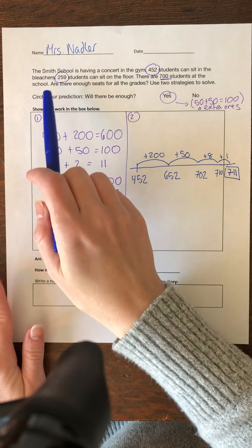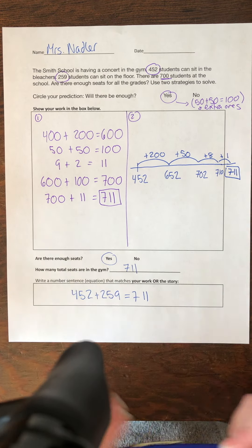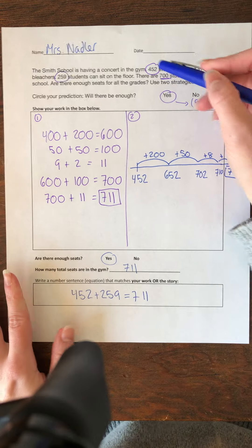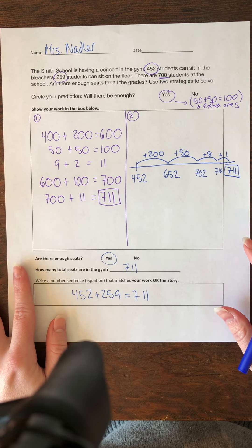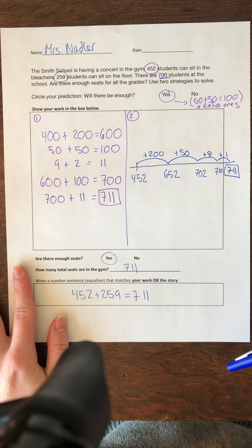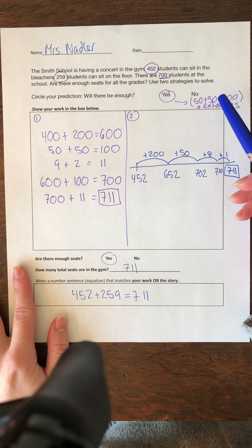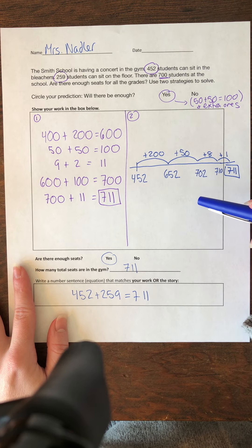So to recap, the Smith School is having a concert in the gym. 450 students can sit in the bleachers. So I pause, I usually just circle that number. 259 students can sit on the floor and I circled that number. There are 700 students at the school.